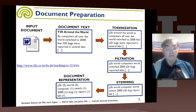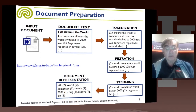The final things you get are the actual tokens. In this case, here are Y2K, world, computer, switch, 2000, bug, report, and lab. Then the document is specified by which tokens it has and how many times the tokens appear, and possibly the position in the document of the tokens.